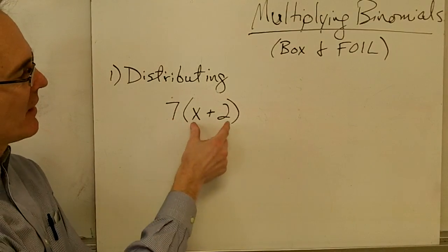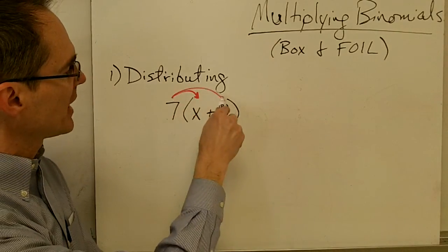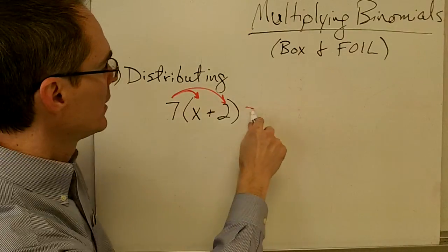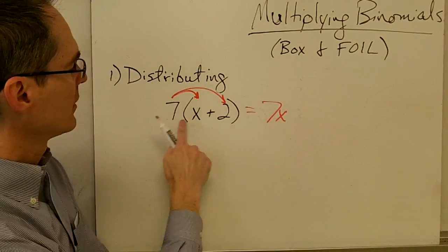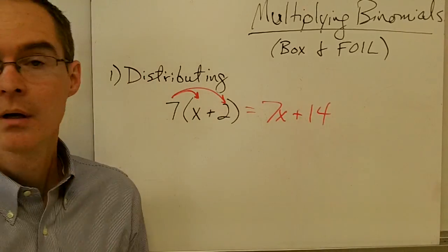So I want to multiply 7 times x plus 2, and to use the distributive property I'm just going to multiply 7 times x and 7 times 2. So 7 times x gives me 7x, 7 times 2 gives me positive 14, and I'm done.